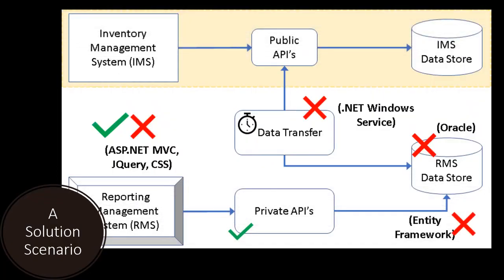Let's have a look at the solution scenario first. Here is an extract of a top-level solution architecture diagram where you can see an inventory management system that connects to a data source through exposed APIs. They want to extend their current architecture to build a new reporting management system, developing a new data transfer component using a .NET Framework-based Windows service that needs to be migrated to the cloud. Let's look at the technology choices for building a background service.